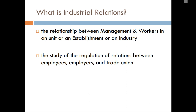Employees, employers, and trade union. Industrial relations have three components or three stakeholders: the employees, the employer, and the trade union. The relationship that exists among these three stakeholders is known as industrial relations.